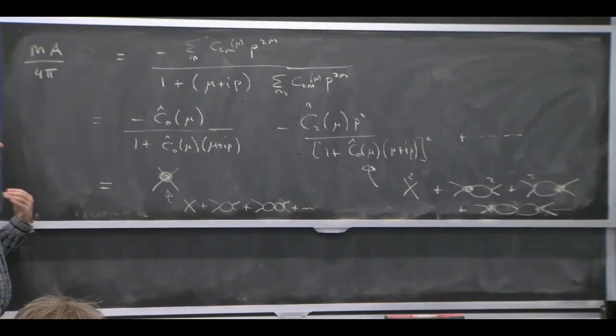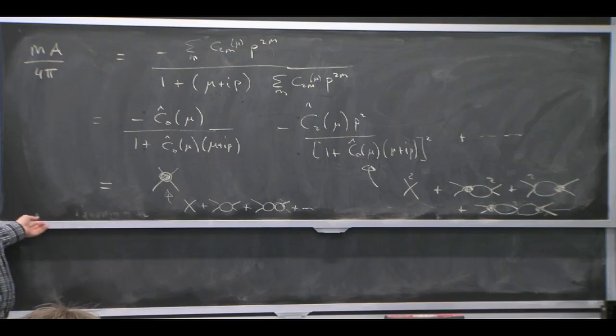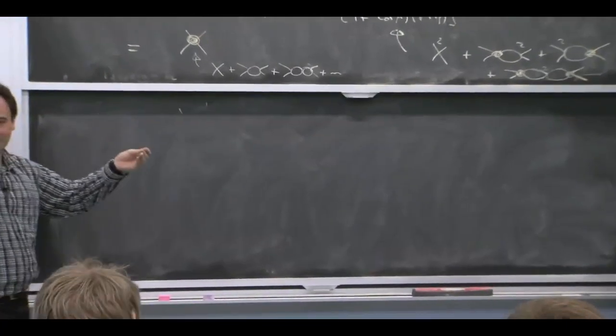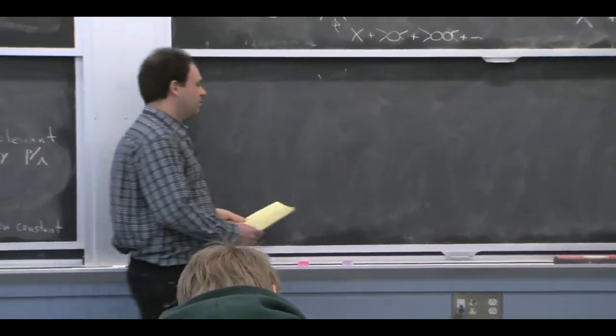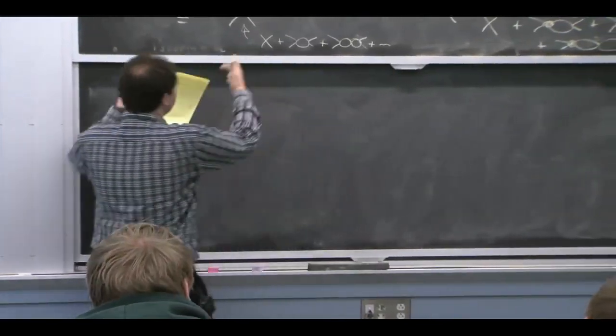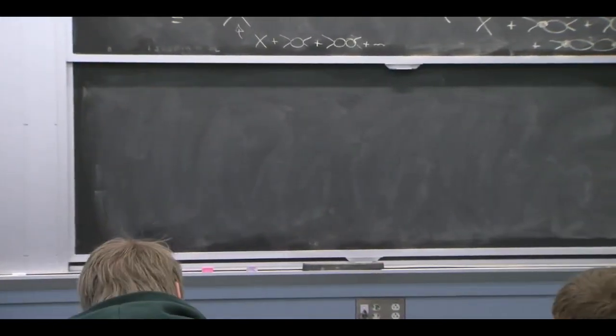So it's like chiral perturbation theory, where we're doing a momentum expansion. And order by order in that momentum expansion, the amplitude is independent of the scale mu. The only purpose of the scale mu is to help us think about power counting of these operators. In the end of the day, when we make physical predictions, then we're getting mu-independent answers.